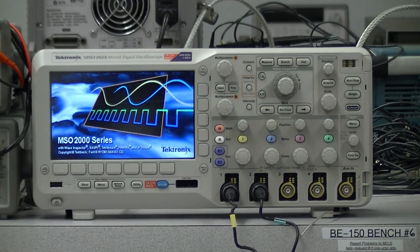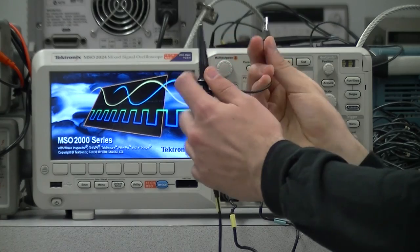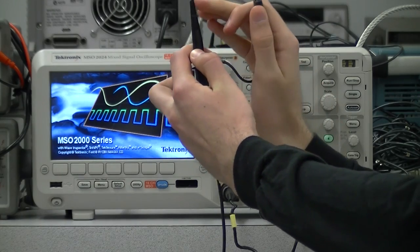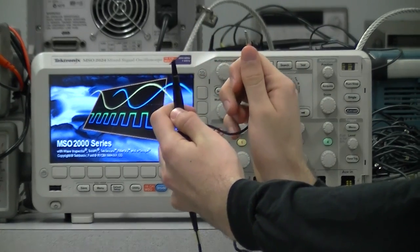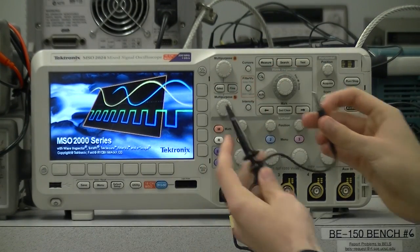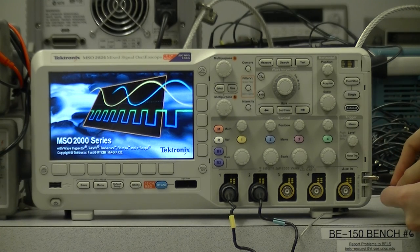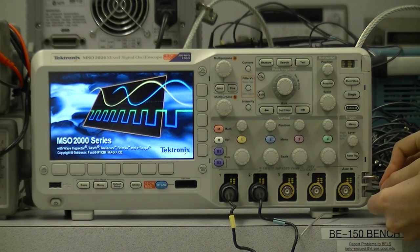But we can do other setup while it's doing that. This is the oscilloscope probe. It consists of an actual probe tip here and a ground lead here. We can connect this to the calibration output of the oscilloscope. The ground lead goes to the upper clip here and the probe to the lower one here.